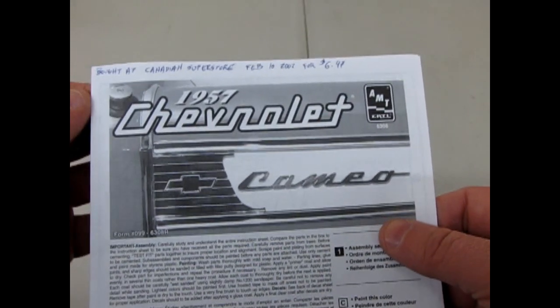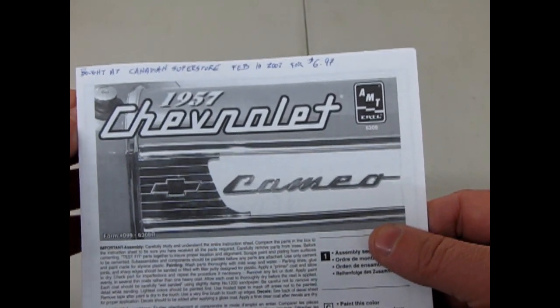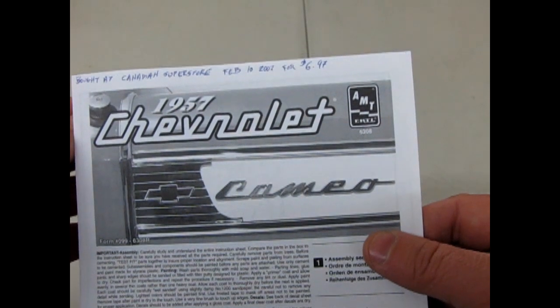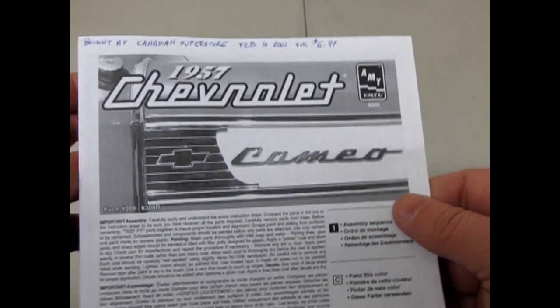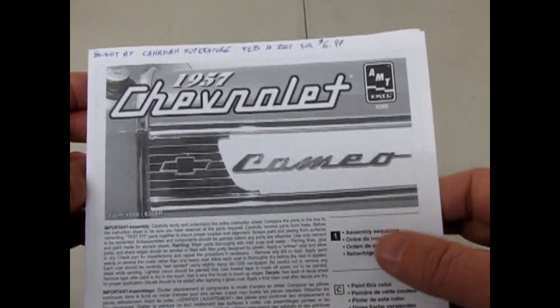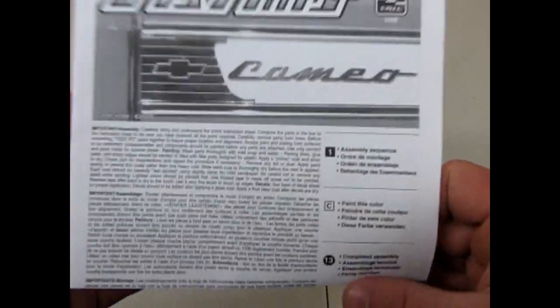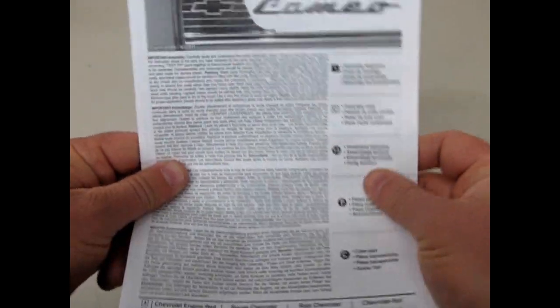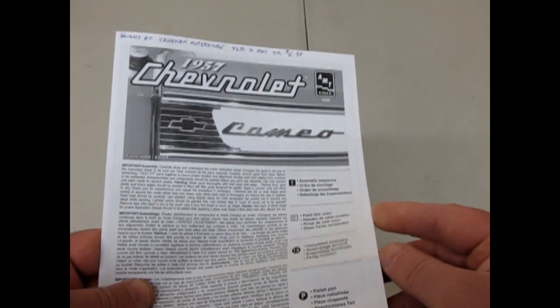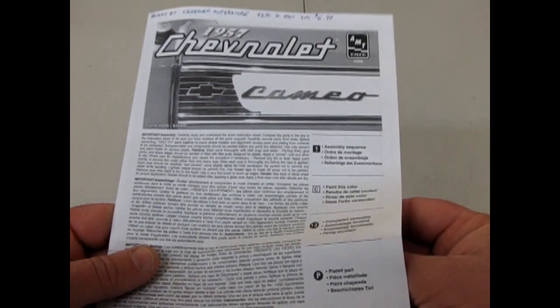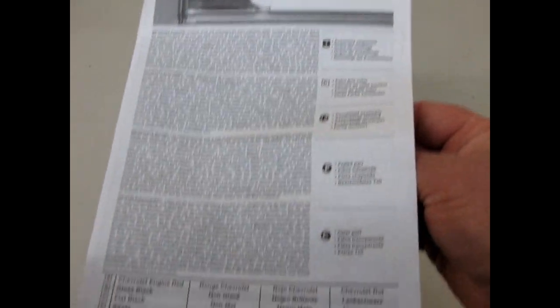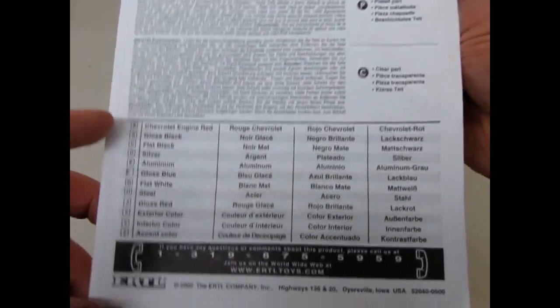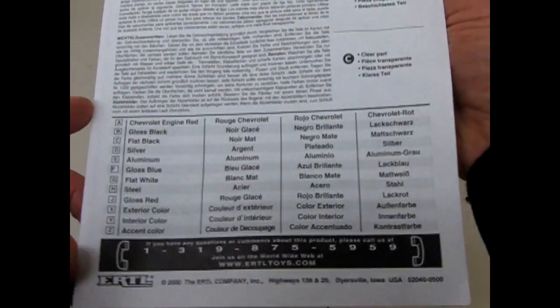I bought this one at the Canadian Superstore back in February of 2002 for $6.97. Now Canadian Superstore is a grocery store and they don't sell these anymore. I do believe the current pricing for 2018 is about $30 to $32 Canadian. But these kits are worth it.